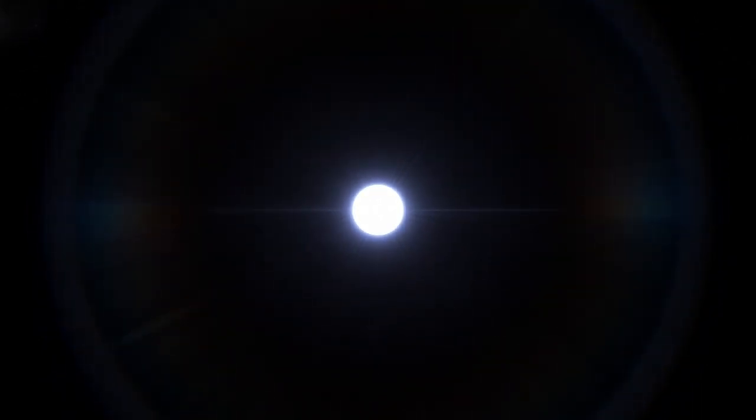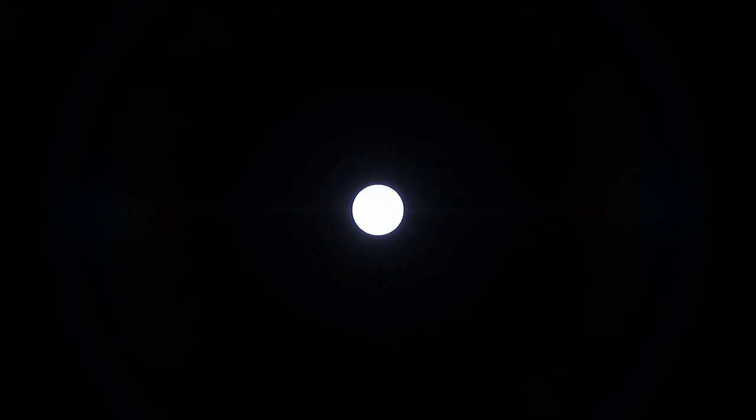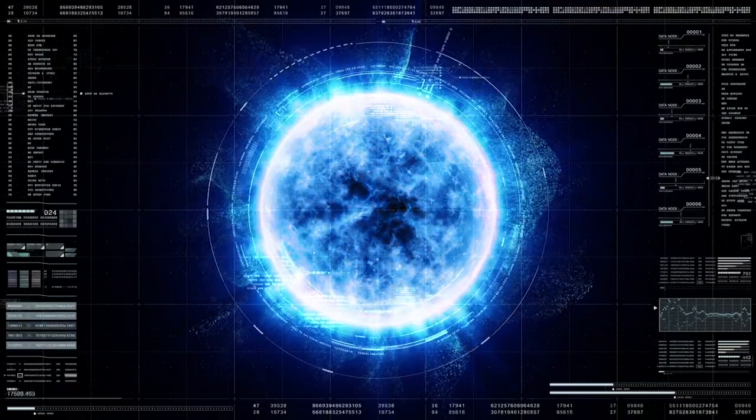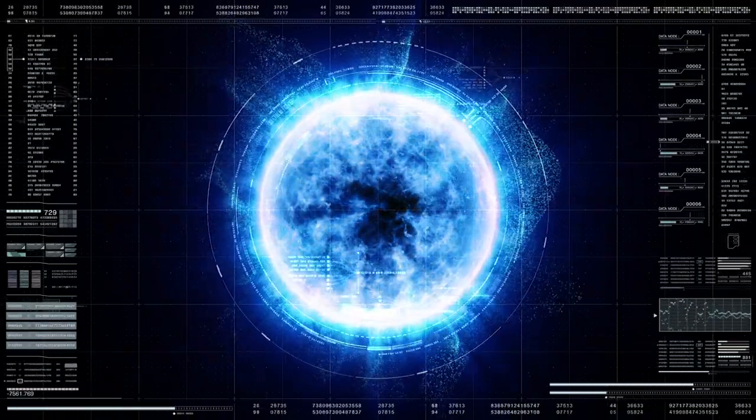White dwarfs get dimmer and dimmer until they eventually stop burning and go dark, thus becoming black dwarf stars, the final stage of a star's evolution. Eventually, our Sun will cycle to the white dwarf stage as well.